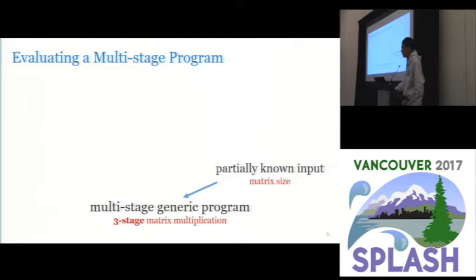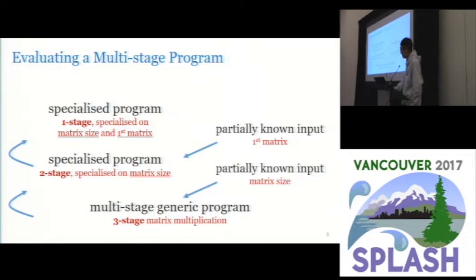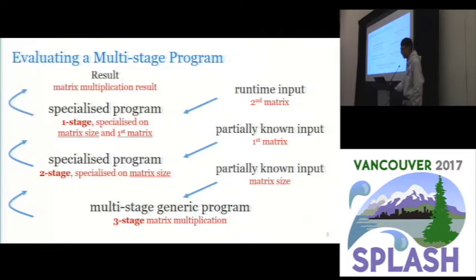Now let's evaluate this three-stage multiplication program on some partially known input. We get a specialized program which is two-stage and then we know the first matrix, we get a one-stage program. Now we could execute a program on the runtime input and we get a matrix multiplication result.